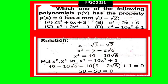25 plus 2² times 4 times 6, so 24, 24 plus 25 equals 49 minus 2 times 5 is 10√6. Now put the values of x² and x⁴